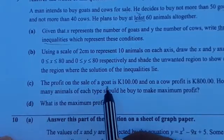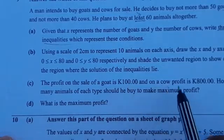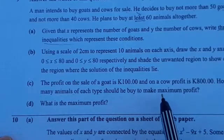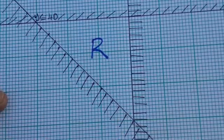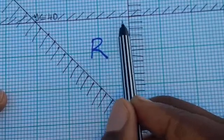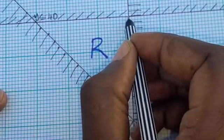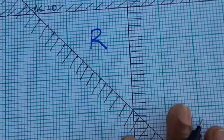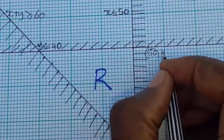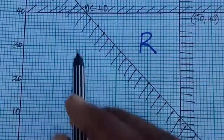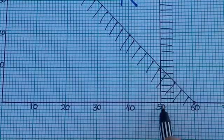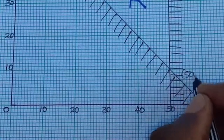Part C says: the profit on the sale of a goat is 100 kwacha and on a cow is 800 kwacha. How many animals of each type should he buy to make the maximum profit? To find the maximum profit, determine the coordinates of the corner points bounding the feasible region. These are: (50, 40), (20, 40), and (50, 10).